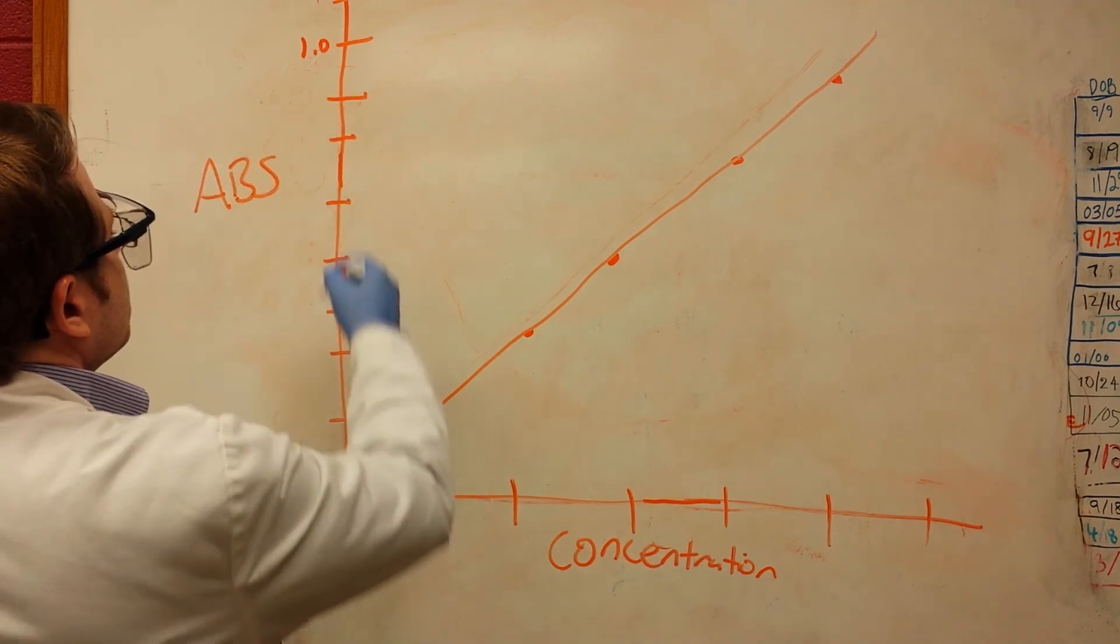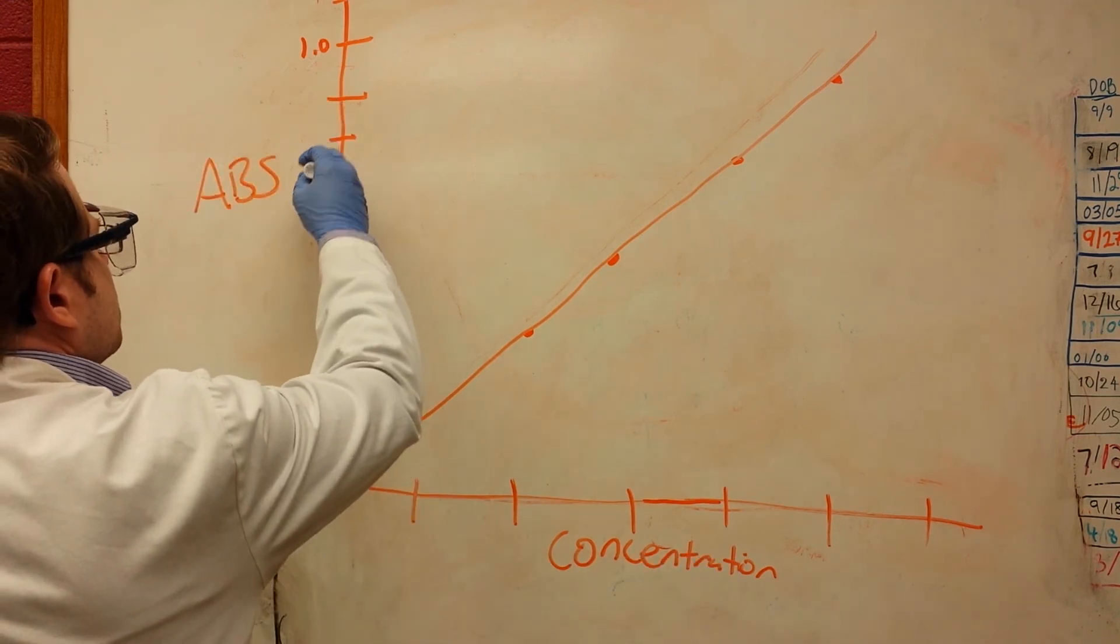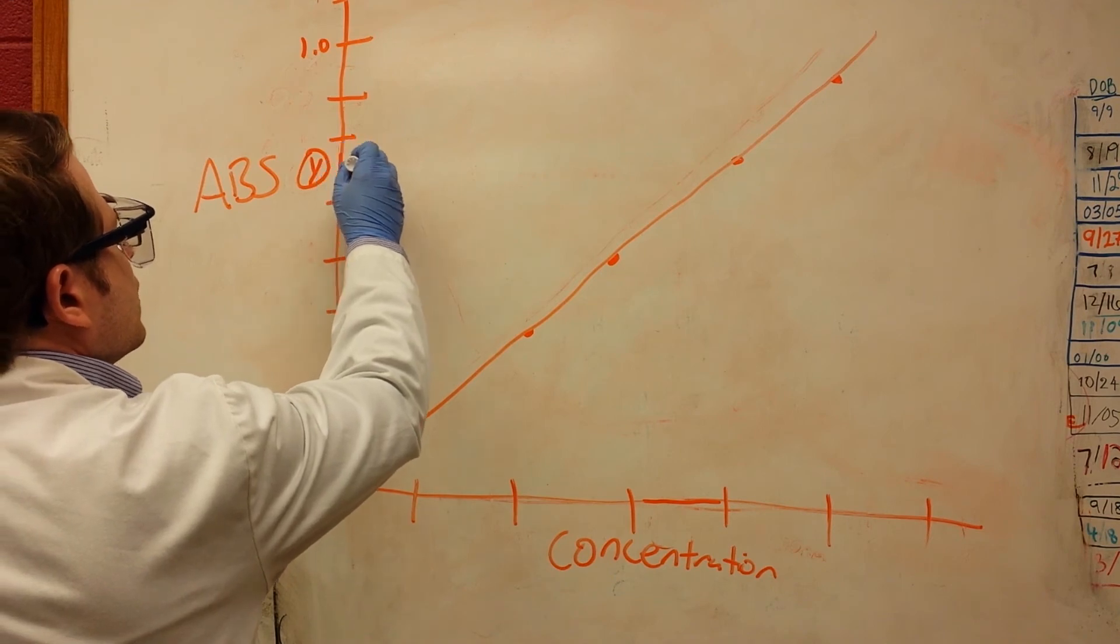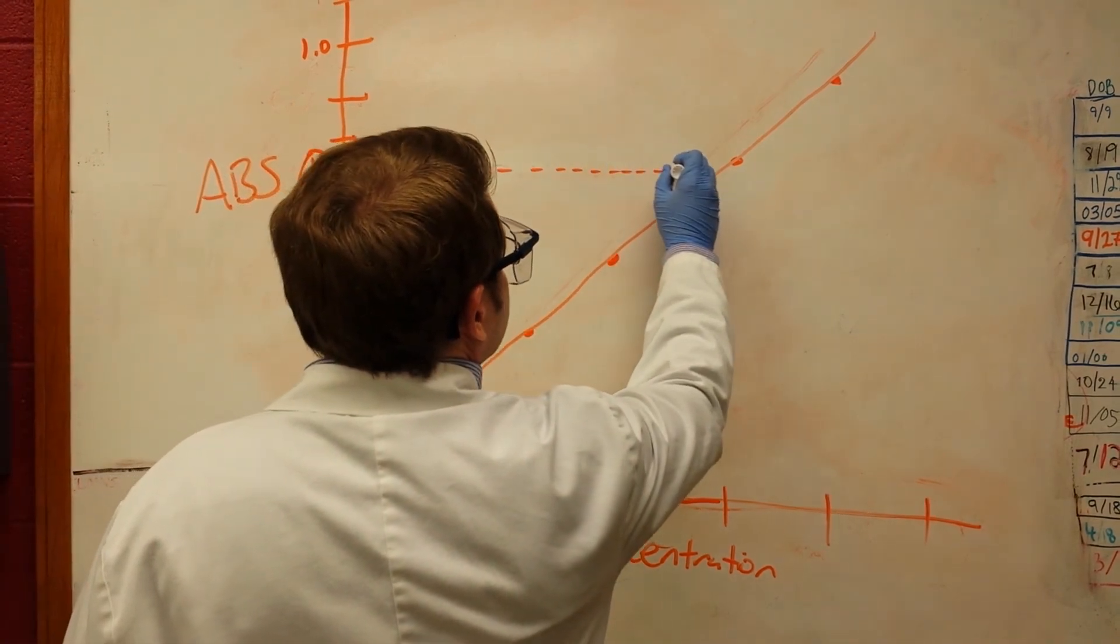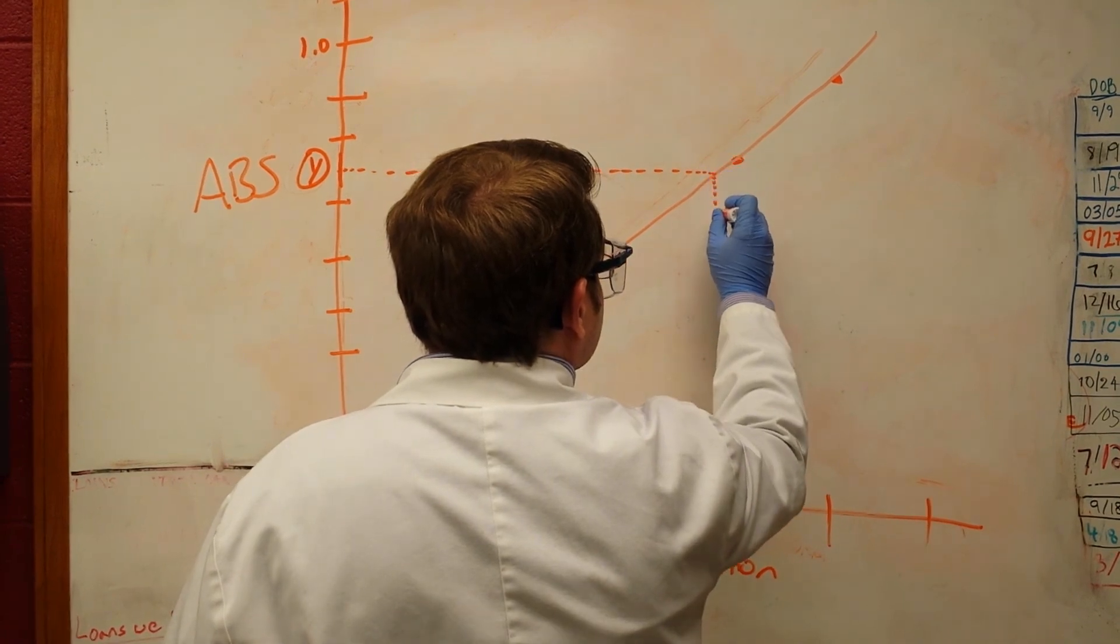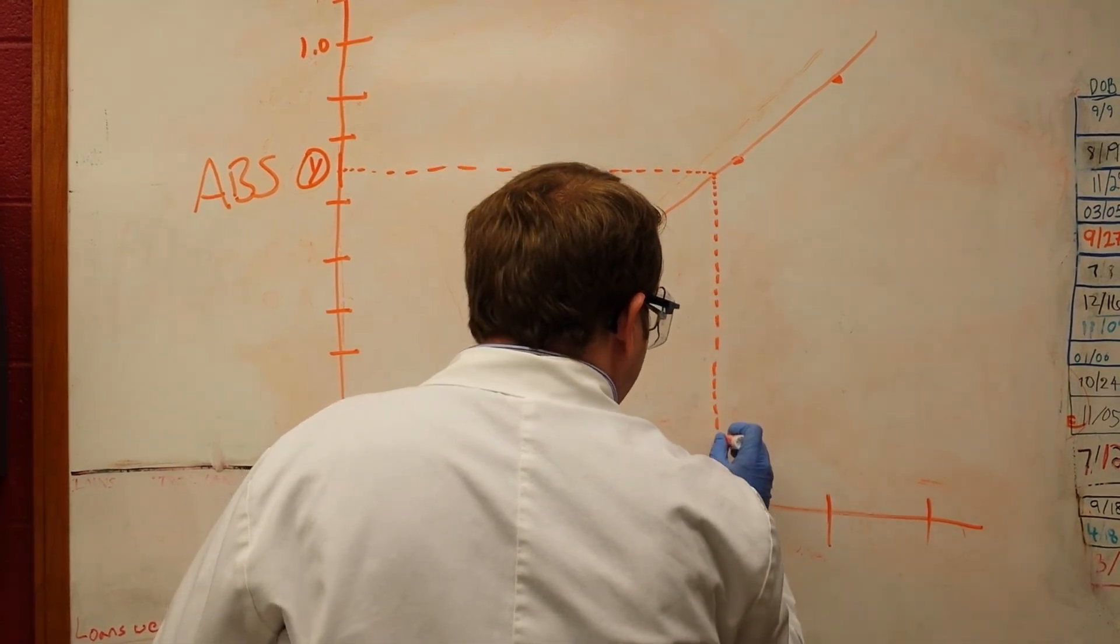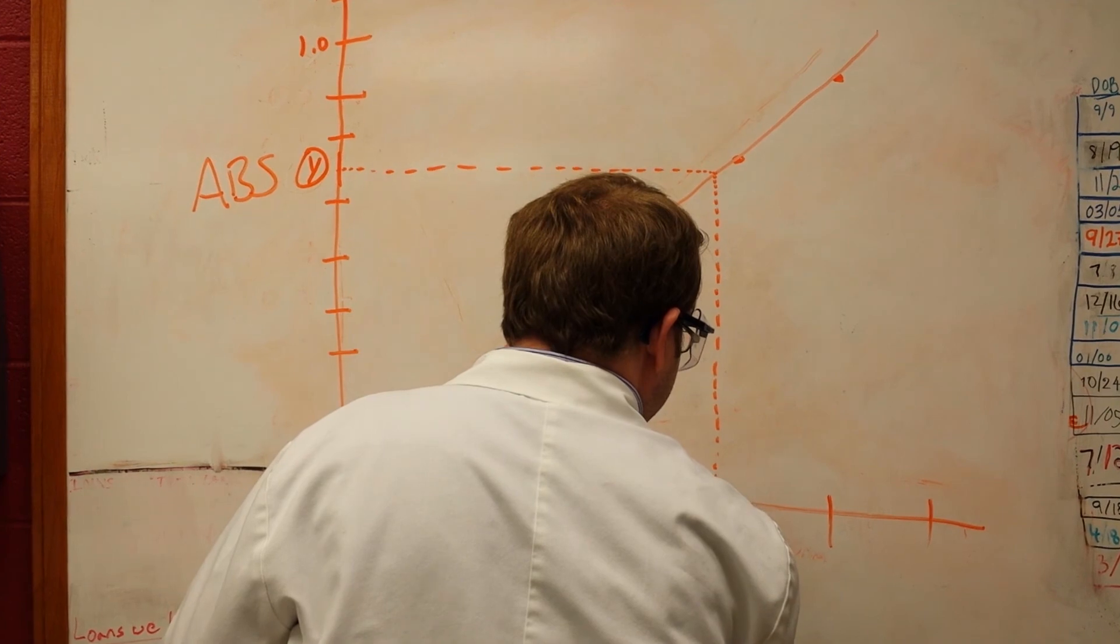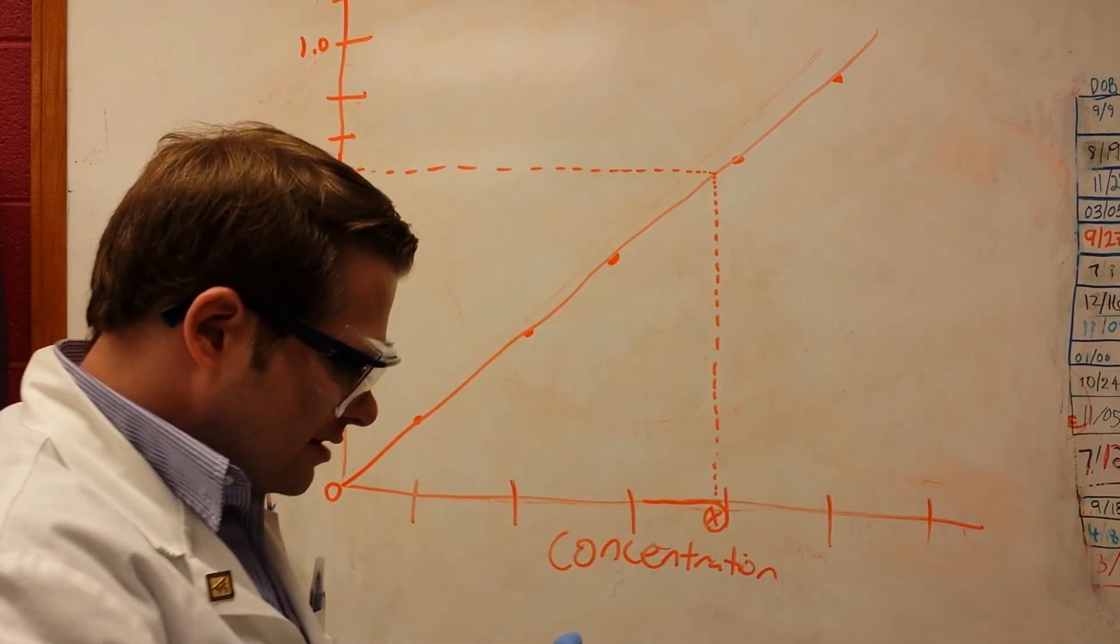Let's say we have an unknown that has an absorbance of y, whatever this random thing might mean. We just go straight out, then we hit the line, and then we go straight down. You can see this concentration is x. That simple.